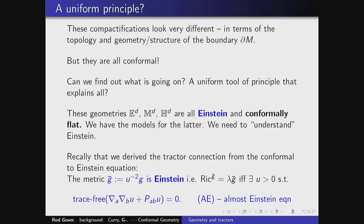G₊ is called conformally compact if you can do this. I will say it's Poincaré–Einstein if the interior metric is Einstein. In Riemannian signature that's standard terminology. When the metric is pseudo-Riemannian it's somewhat loose terminology, but I want to simplify it for the talk. Coming back to the compactifications, we looked at Euclidean space, Minkowski space, and Escher's fish — the compactifications all look a bit different, giving very different sorts of boundary things. But they were all conformal geometry.